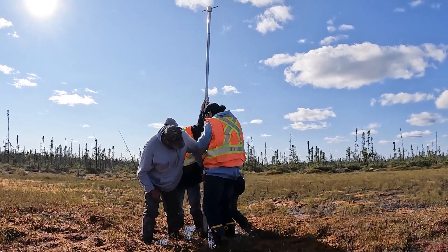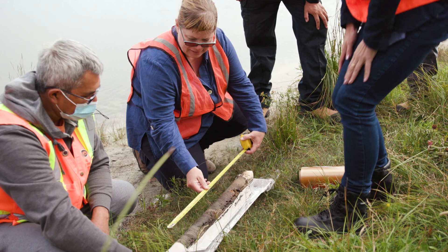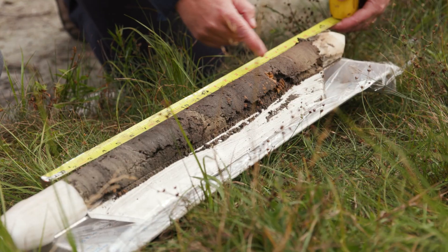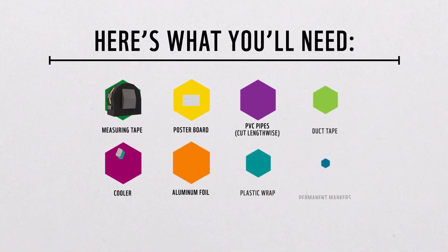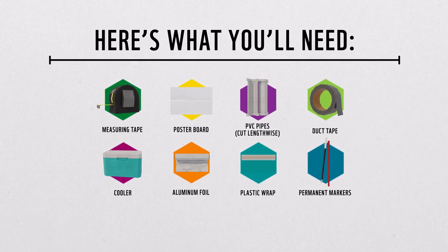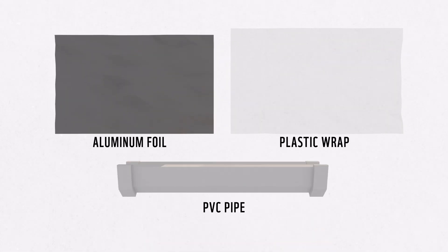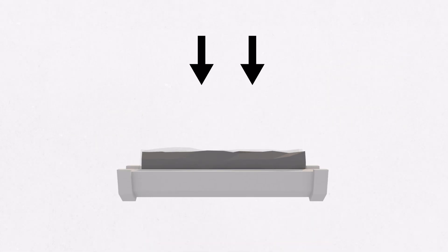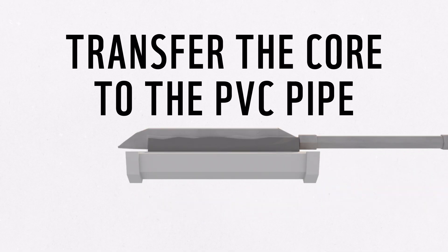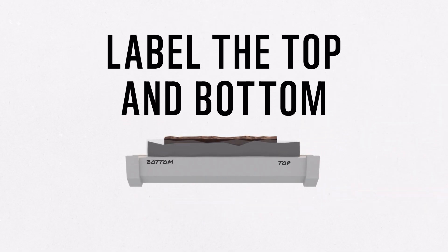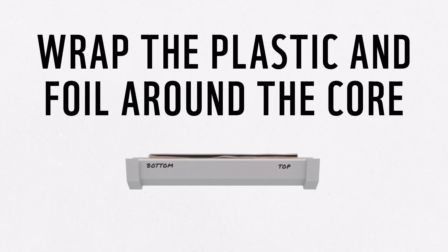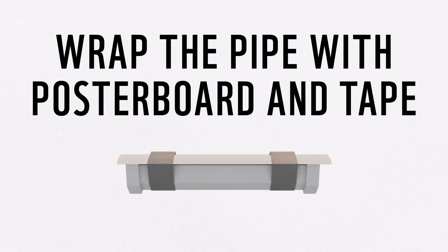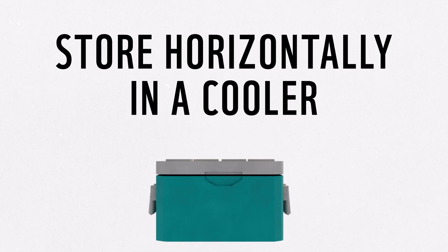Decide ahead of time whether the corer will be sectioned in the field or transported whole to a lab. If you are unsure or short on time, transport the entire peat core to the lab for sectioning and processing. For full peat core packaging, line the inside of the PVC pipe with aluminum foil and plastic wrap, then move the peat core into the PVC pipe. Be sure to label the top and bottom. Next, wrap the peat core in plastic and aluminum to ensure the core stays fresh, further secure the core with poster board and tape. Finally, store the sample horizontally in a cooler.